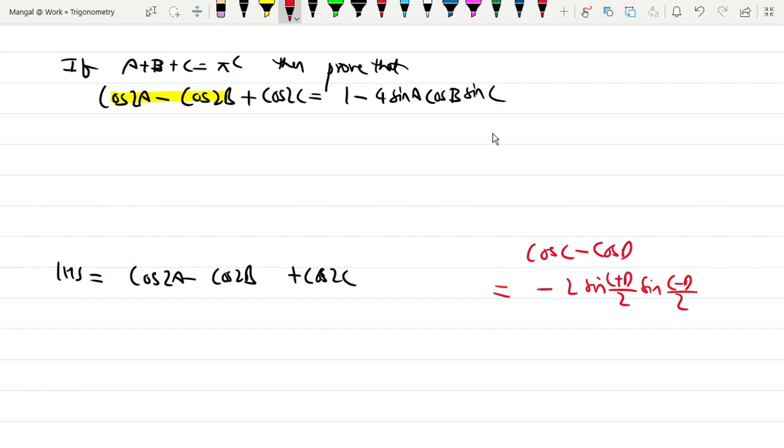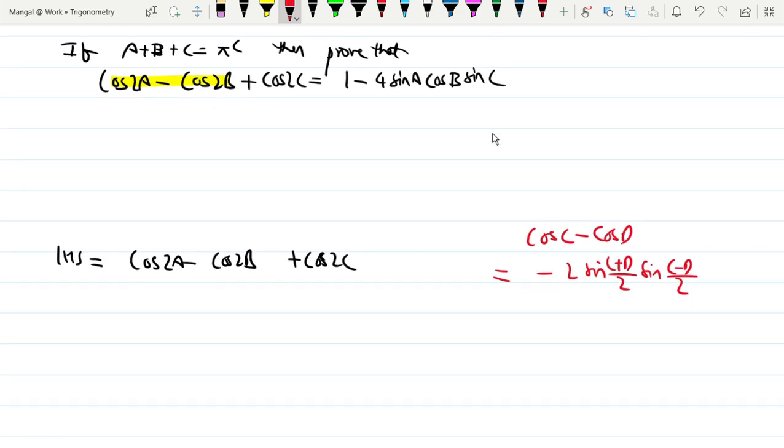So cos(c) - cos(d) from our problem is -2sin((2a+2b)/2)sin((2a-2b)/2), which equals -2sin(a+b)sin(a-b), and then + cos(2c) as it is.